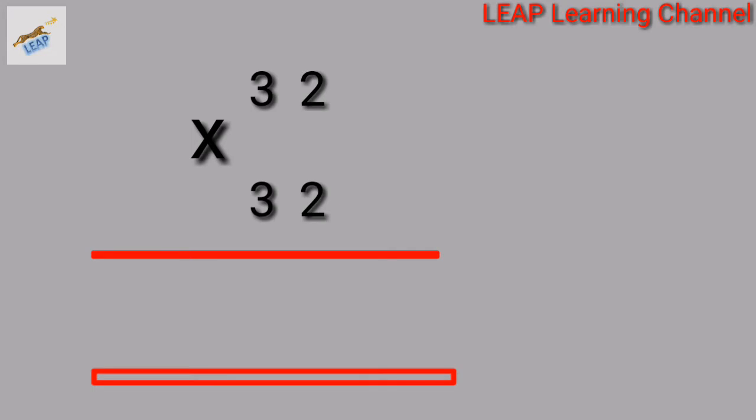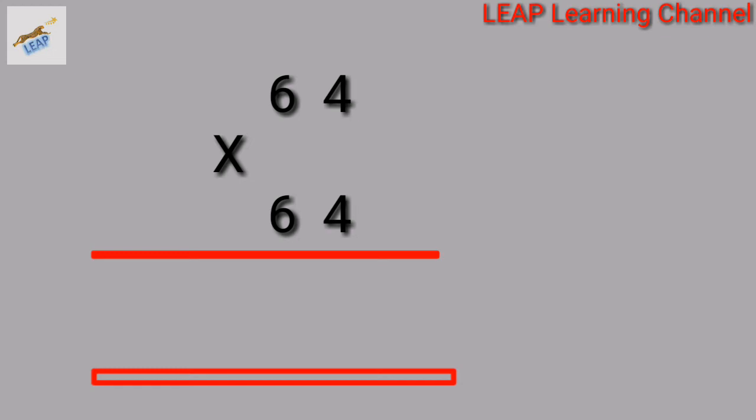Next one, 32 squared: 32 into 32. 2 into 2 is 4. Cross multiply: 3 into 2 is 6. Then double it: 6 into 2 is 12. Write 2, carry over 1. 3 into 3 is 9. 9 plus 1 is 10.